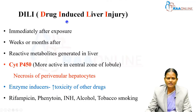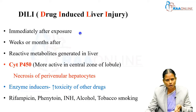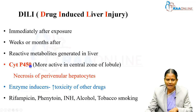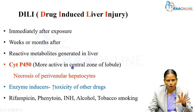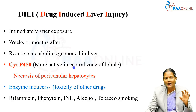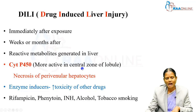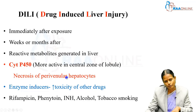Drug-induced liver injury can occur immediately after exposure to the drug or a few weeks or months afterwards. This is because of the reactive metabolites which are generated in the liver. Cytochrome P450 is the major enzyme, more active in the central zone of the lobule. The liver has acini, lobules, a central vein, and three zones. DILI most commonly starts with necrosis of the perivenular hepatocytes.